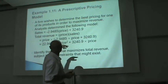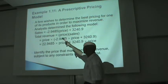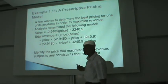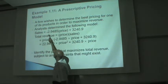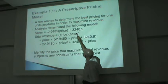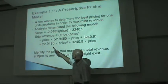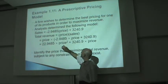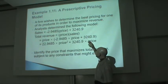Firm's wishes: sales is this, not the revenue. What is a prescriptive pricing model? Example: a firm wants to determine the best pricing for one of its products in order to maximize revenue. They determine the following model: sales is affected by minus 2.9 times the price plus 3,240.9. And revenue equals price times sales. So you substitute sales in, and you get negative 2.9 times the price squared plus 3,240.9 times the price.